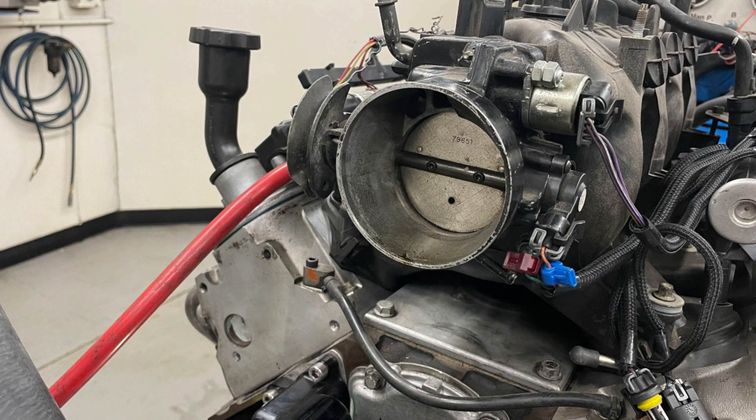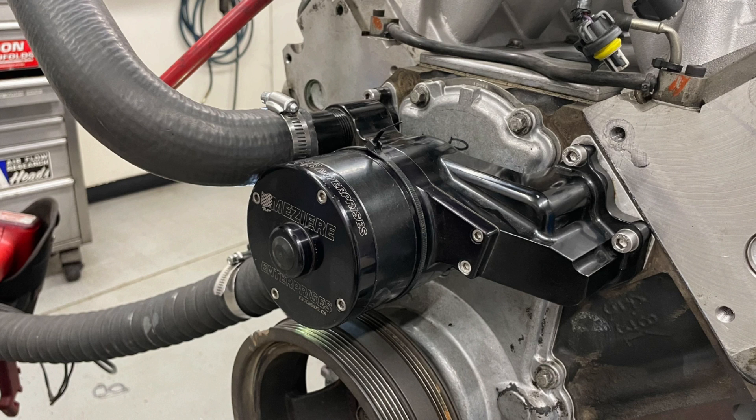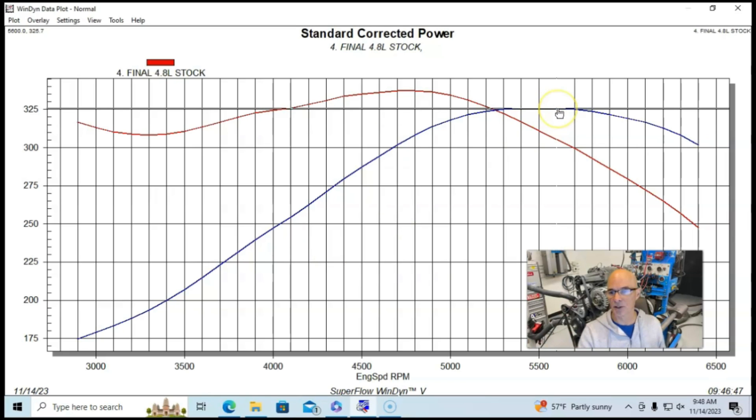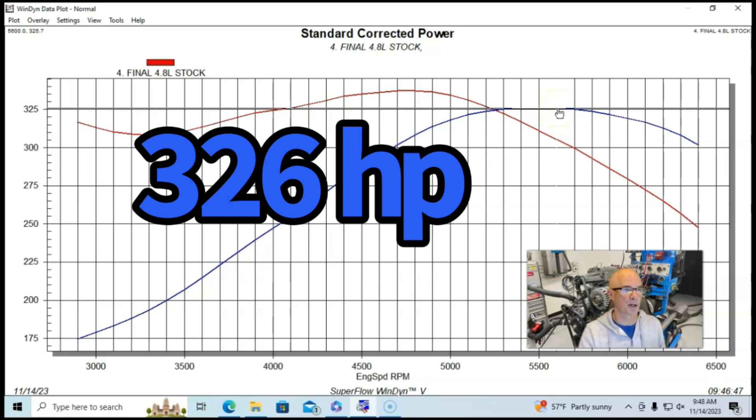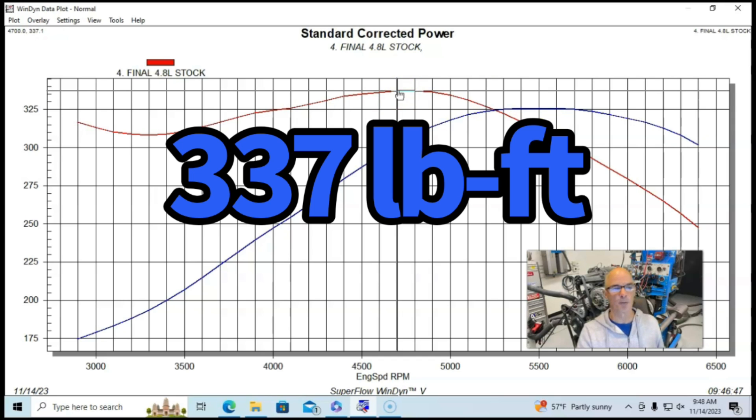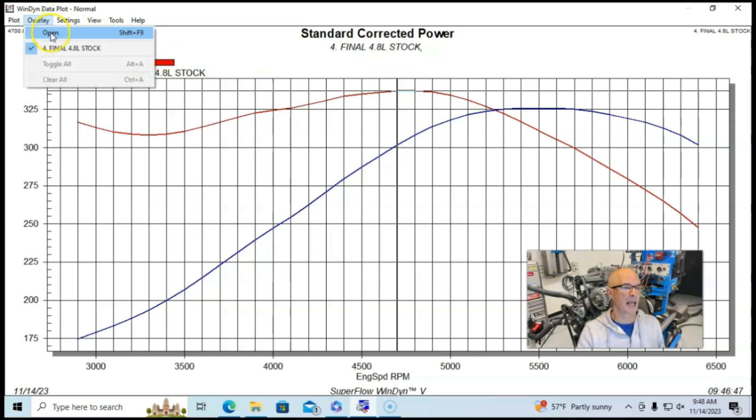Here's what happened: we ran the stock 4.8 the way that we run it—long tube headers, open throttle body, no accessories. We ran it with a Holley HP management system and an optimized tune, and our stock 4.8 liter produced 326 horsepower and 337 foot-pounds of torque.